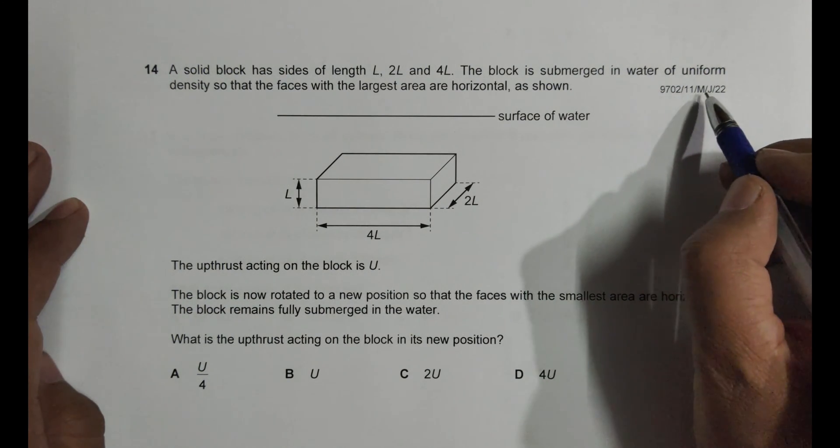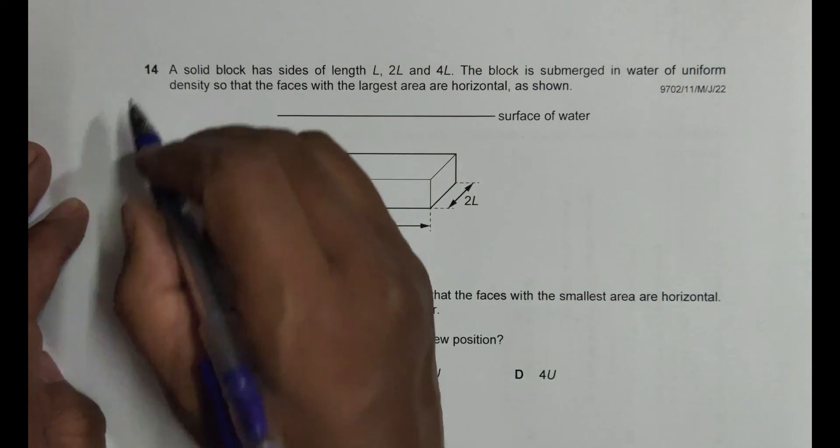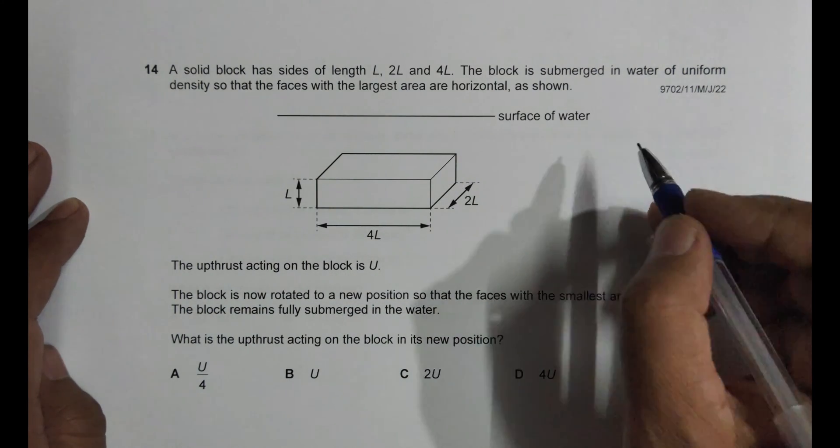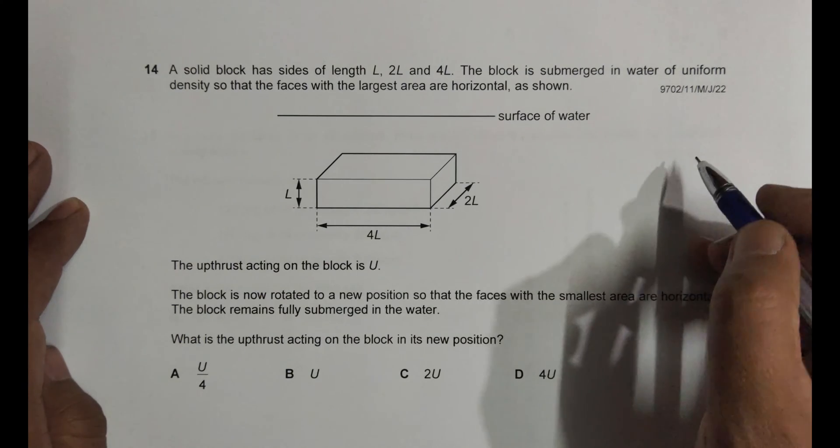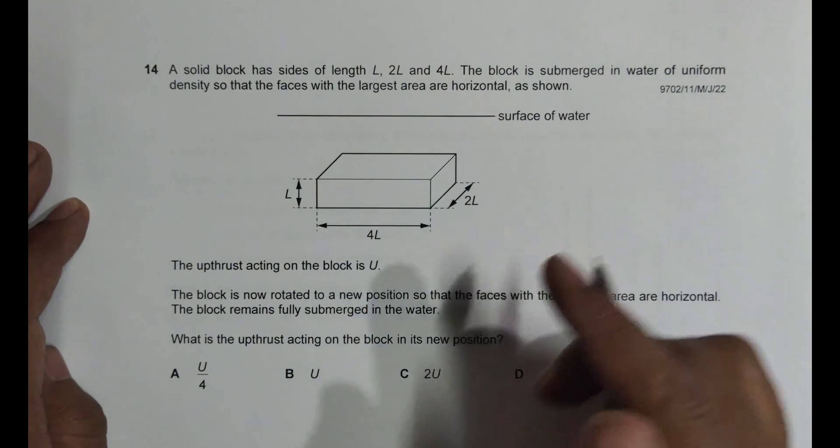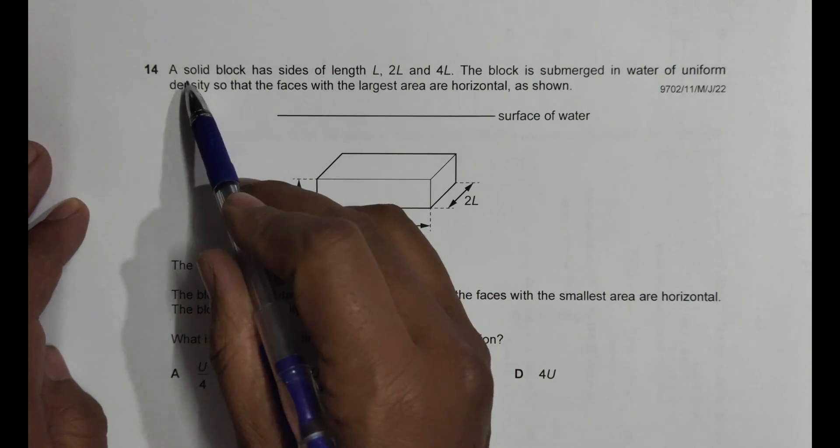Hello folks, this is 2022 major paper 11 and the question number is 14. This question is concerned with the chapter forces, density, and pressure. The subtopic is about upthrust.